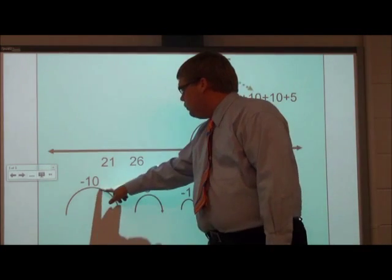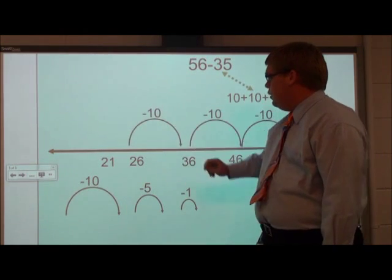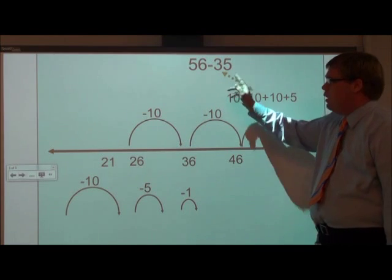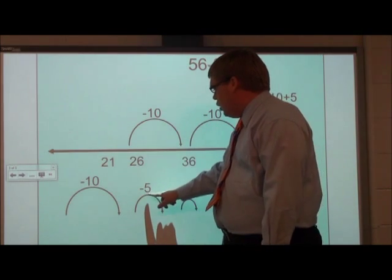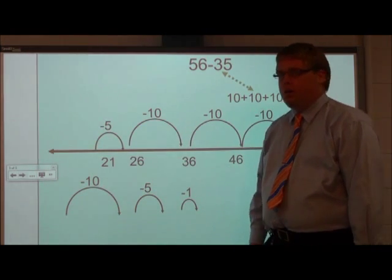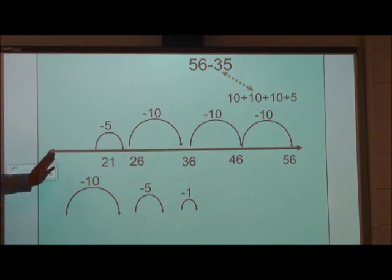We are going to do it one more time, 36 minus 10, and we will be at 26. So now we subtracted 30, we have 5 more to subtract to get our 35, so we are going to go from 26, take away 5, and we will end up at 21. So we know that 56 minus 35 will equal 21.